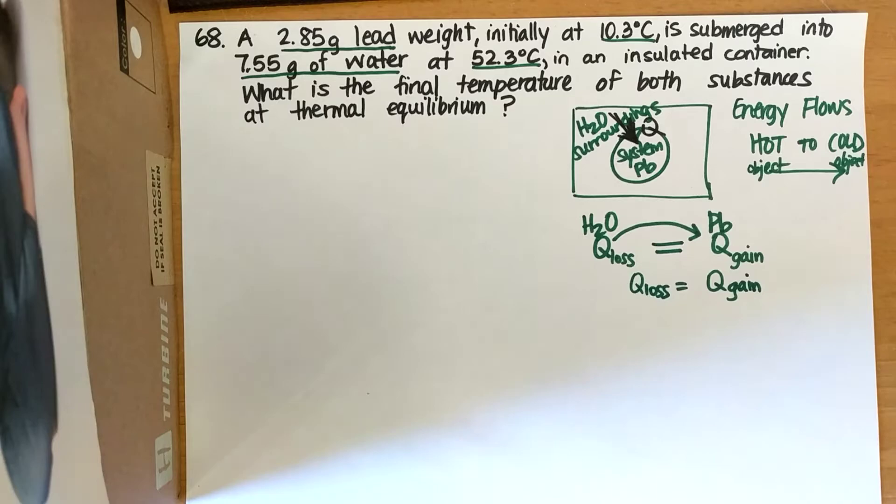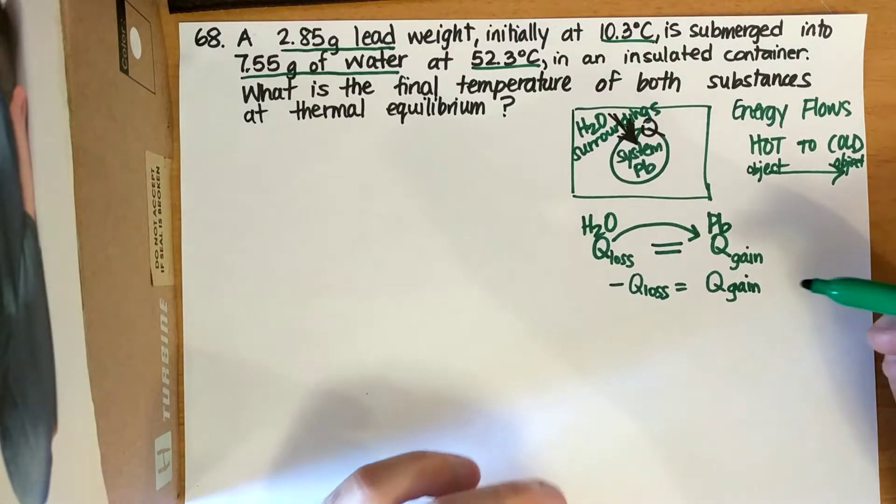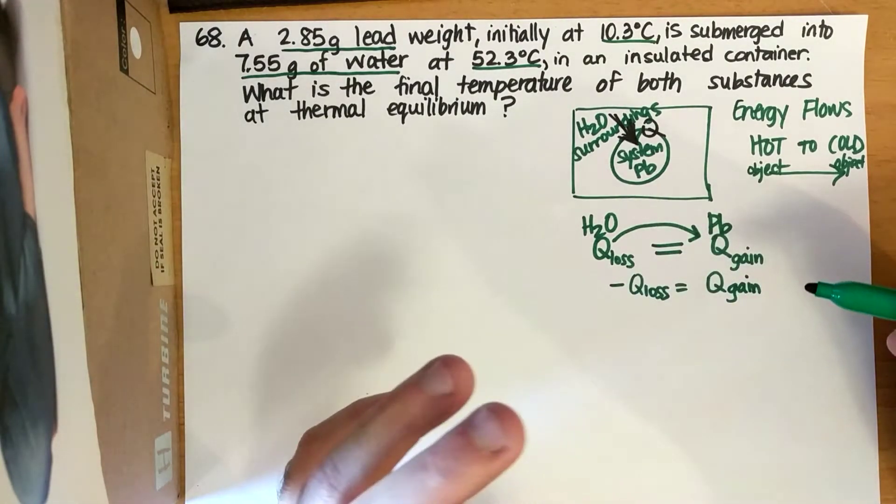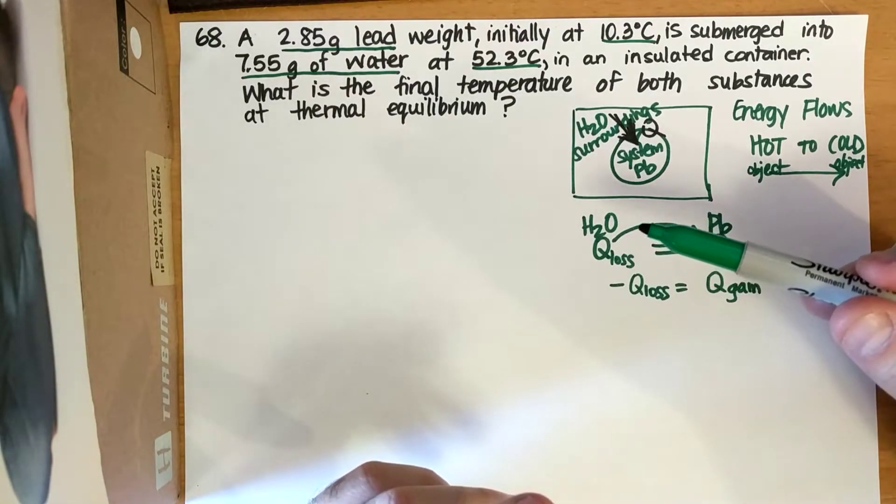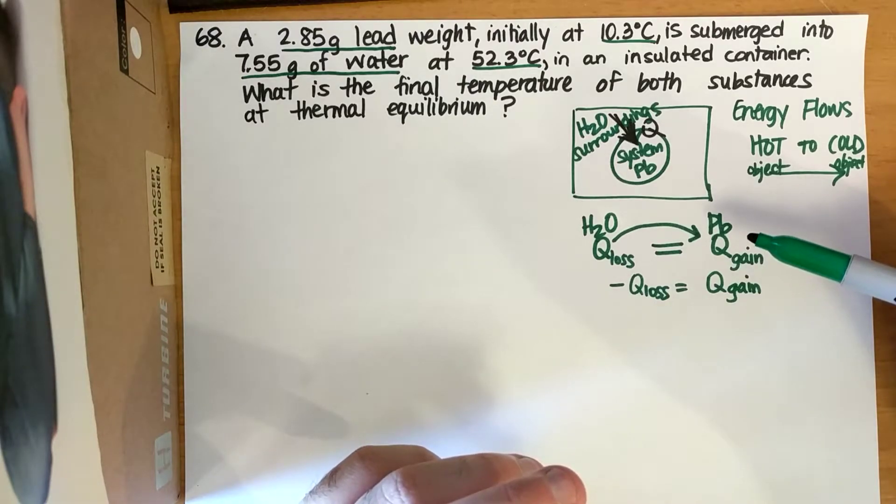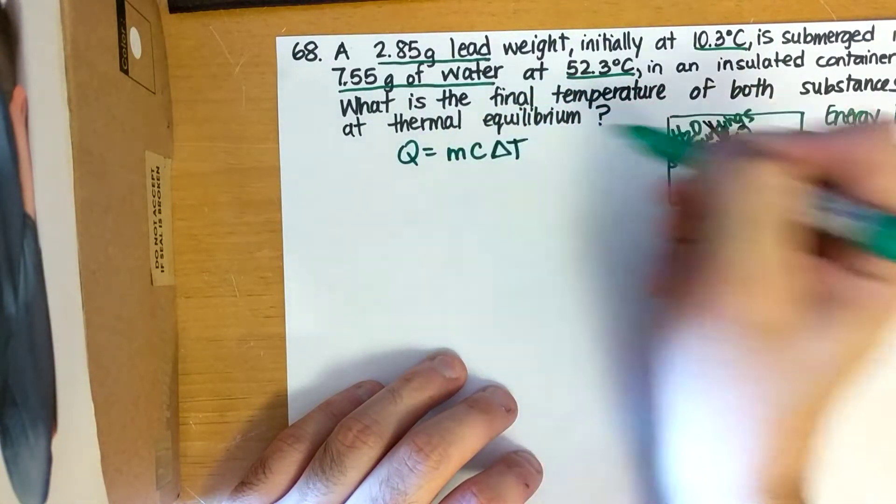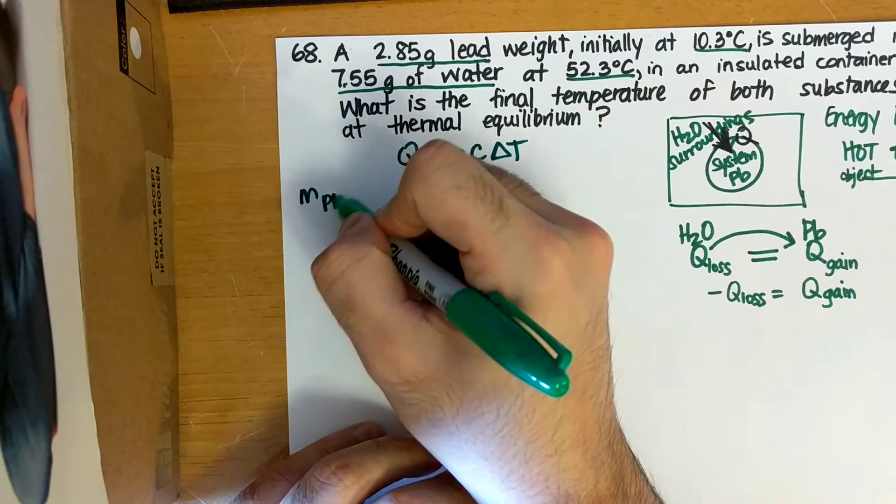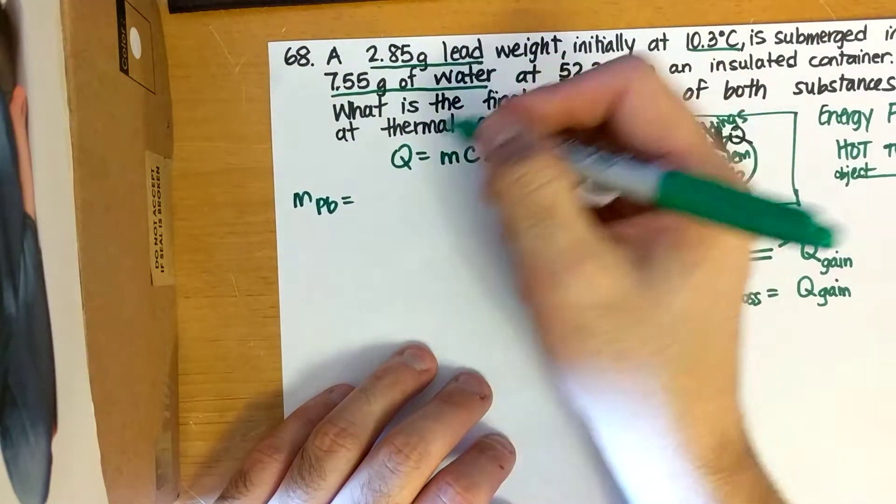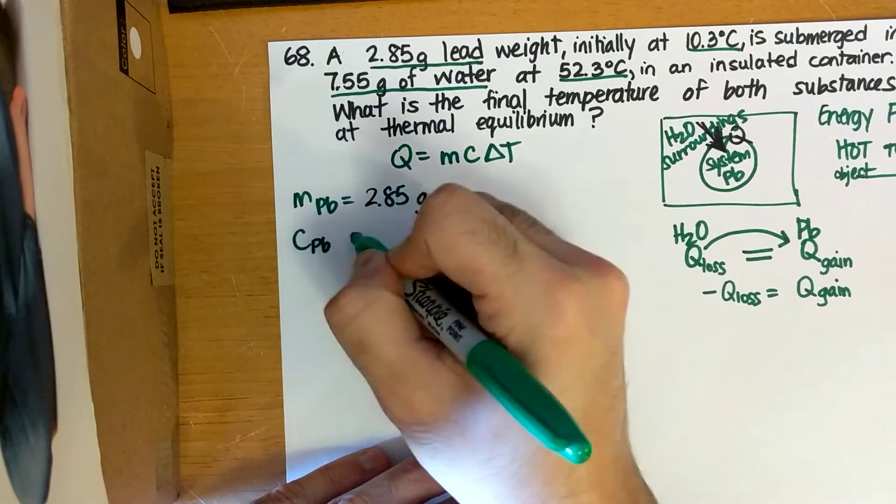Okay, and conventionally we denote Q loss as negative. So negative Q loss is equal to Q gain. That's because this number, due to conservation of energy and matter, cannot be different on both sides. So if this water lost 20 kilojoules, it must have gone to the lead, which gained then 20 kilojoules. So we're going to keep this in mind. We know this equation is Q equals MC delta T. Let's write down some MCs and delta Ts that we could know. We know the mass of lead. It was given to us as 2.85 grams.